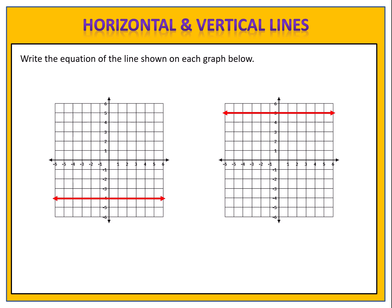Here are two examples for you to try. Can you write the equation of the lines shown on each graph? The first one passes through the y-axis at negative 4, so the equation is y equals negative 4. The second graph passes through the y-axis at 5, so the equation is y equals 5.